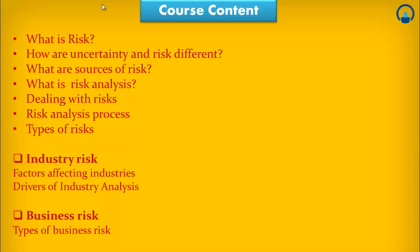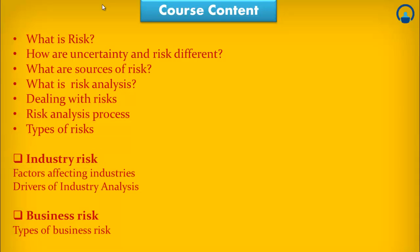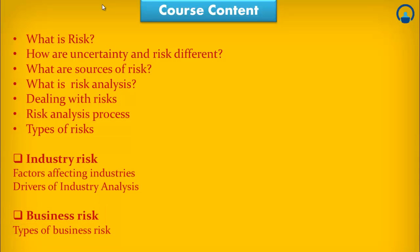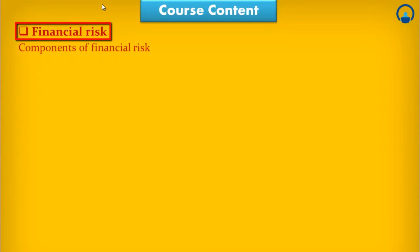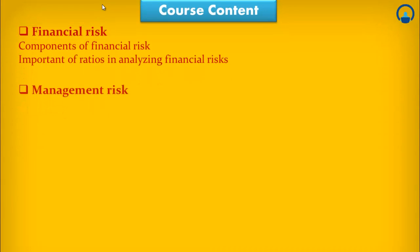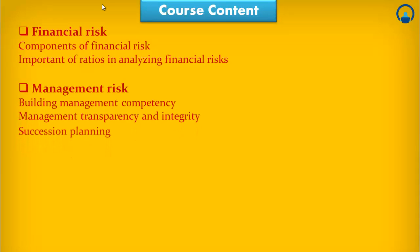Under types of risk, the first type is industry risk — we'll look at the various factors that can affect industries and the drivers of industry analysis. Then we'll come to business risk, wherein we'll see the types of business risk. After which comes financial risk, and we'll see the components and the ratios that can be used in order to analyze financial risk.